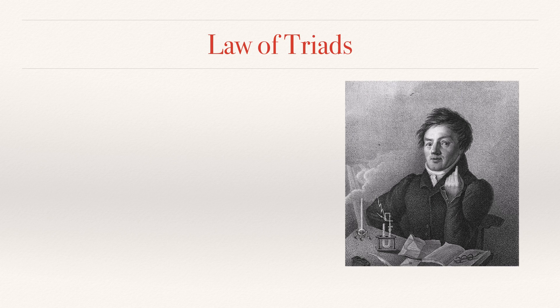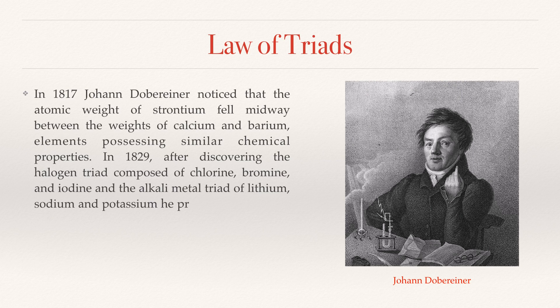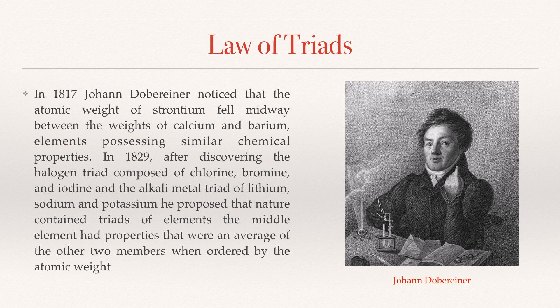Law of Triads. In 1817, Johan Döbereiner noticed that the atomic weight of strontium fell midway between the weights of calcium and barium, elements possessing similar chemical properties.